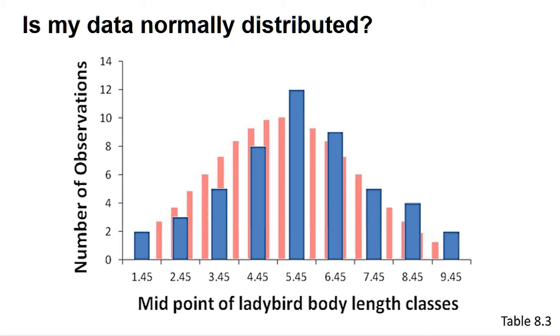This generates a probability, and if it is below 0.05, we can state the observed and expected data are significantly different, and that our data is not normal. How to do this chi-squared test is detailed in the book.